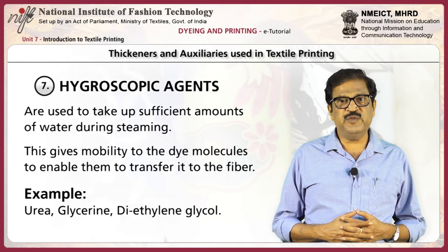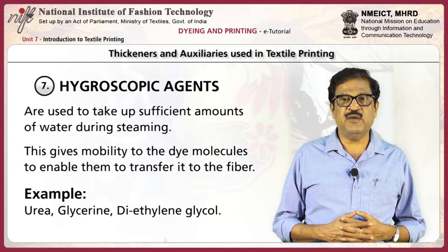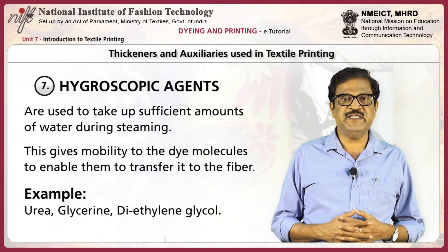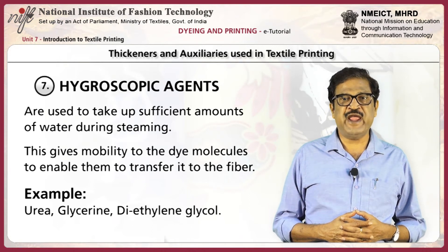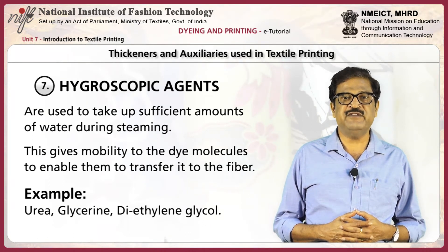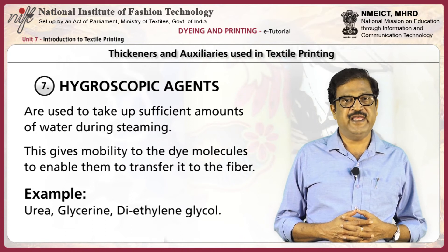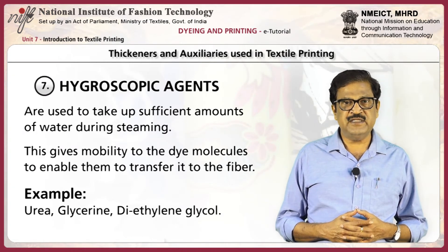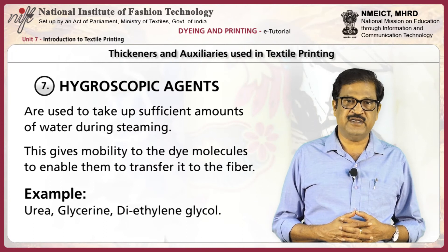Hygroscopic agents are used to take up sufficient amount of water during steaming, giving mobility to the dye molecules to enable them to transfer into the fiber. Examples are urea, glycerine, and diethylene glycol.